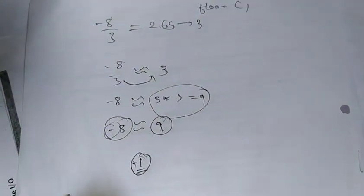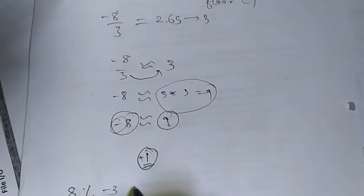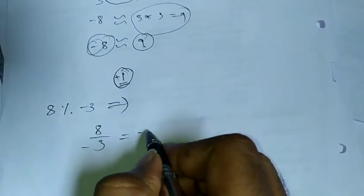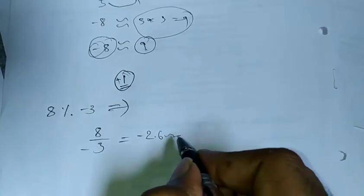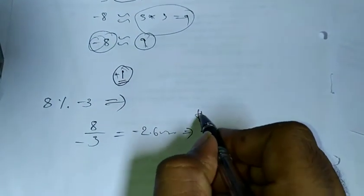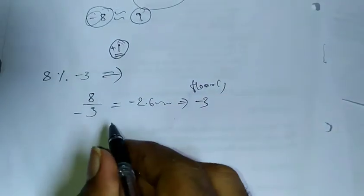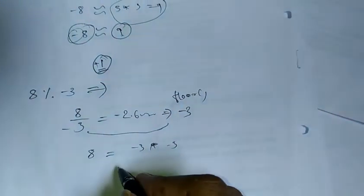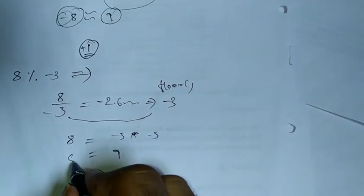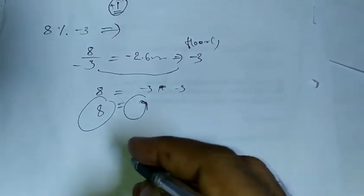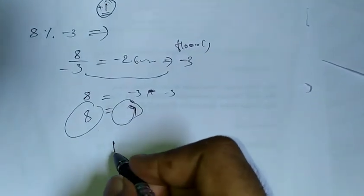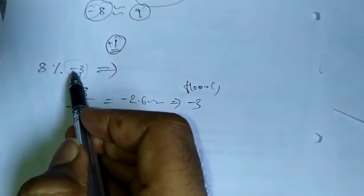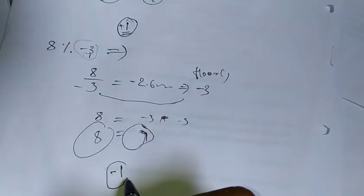Now if we do the same with 8 modulo minus 3, we have to find this answer. Like I told you, 8 divided by minus 3 will be minus 2.6 something. We'll use floor, which gives us minus 3. So 8 equals minus 3 times minus 3, which is 9. The difference between 8 and 9 is 1. First we find the difference, then we add the denominator sign. The denominator is minus, so we add a minus operator. So the value is minus 1.